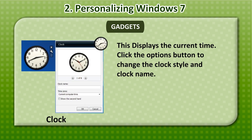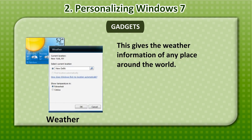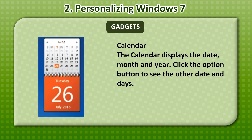Let us have a look at some of the Windows 7 gadgets. Clock: This displays the current time; click the Options button to change the clock style and clock name. Slideshow: This shows a continuous slideshow of pictures on your system. Weather: This gives the weather information of any place around the world. Calendar: The calendar displays the date, month and year.